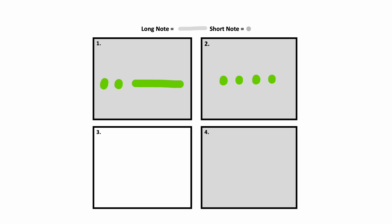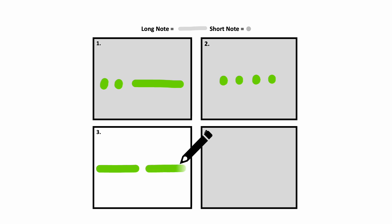Here is box number three. Here is box number three again. Did you draw two lines? Then you're right — those were two long notes: long, long.